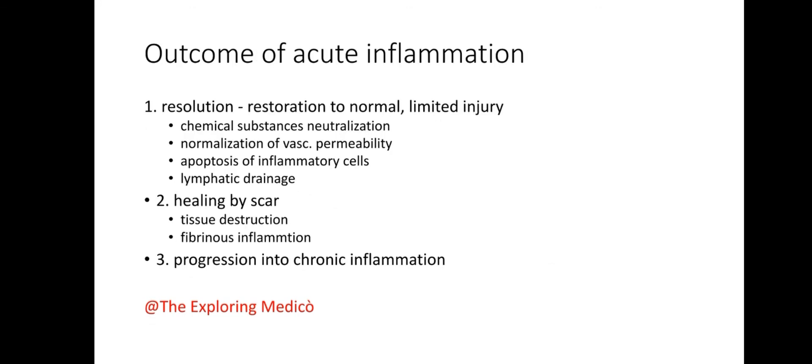Outcomes of acute inflammation include: first, resolution — restoration to normal after limited injury, such as chemical neutralization, normalization of vascular permeability, apoptosis of inflammatory cells, and lymphatic drainage. Second, healing by scar tissue destruction and fibrinous inflammation. Third, progression into chronic inflammation.